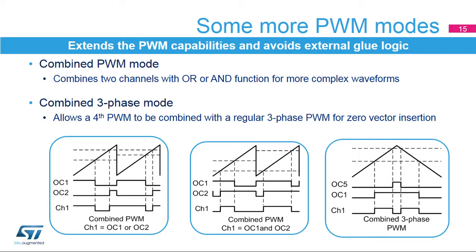The combined three-phase mode specifically targets three-phase motor control applications. In this case, channel 5 of the timer can be combined with any of channels 1, 2, or 3 to insert a low state in the middle of a centered pattern PWM signal. This mode greatly simplifies the implementation of low-cost current sensing techniques for three-phase motor control using a technique referred to as zero-vector insertion.